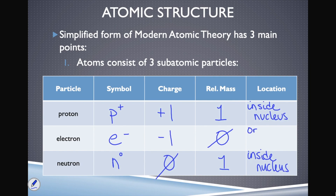Electrons are found not inside the nucleus — they are found orbiting the nucleus. Rutherford and Bohr's research shows that electrons are not in the nucleus but take up orbits outside of it.